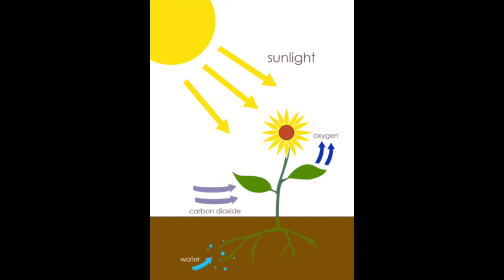And light energy is used to convert carbon dioxide from the air and water from the soil to glucose, which is stored as starch, and oxygen, which is a waste product.